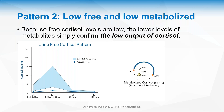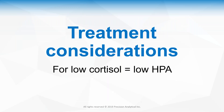Pattern two is the complete opposite: low free and low metabolized cortisol. This just confirms everything is low — the pattern, free cortisol, and production are all low. It could be Addison's — if values are near zero, get that further tested. But there are many other reasons for low cortisol.